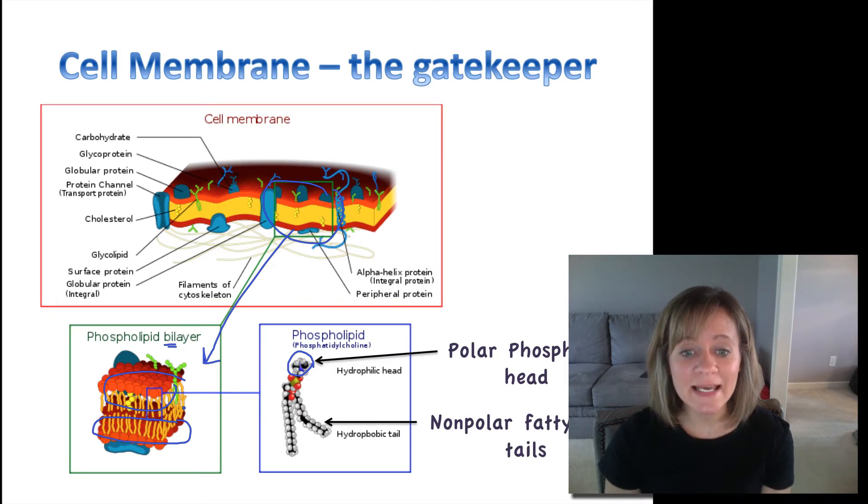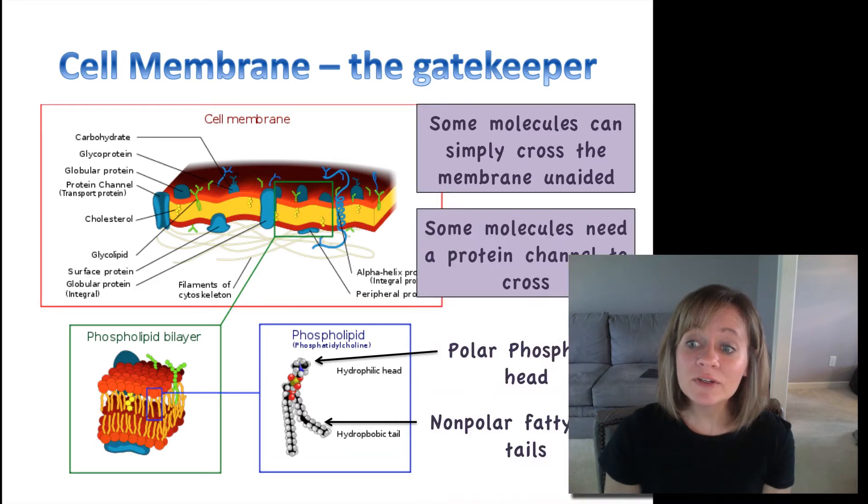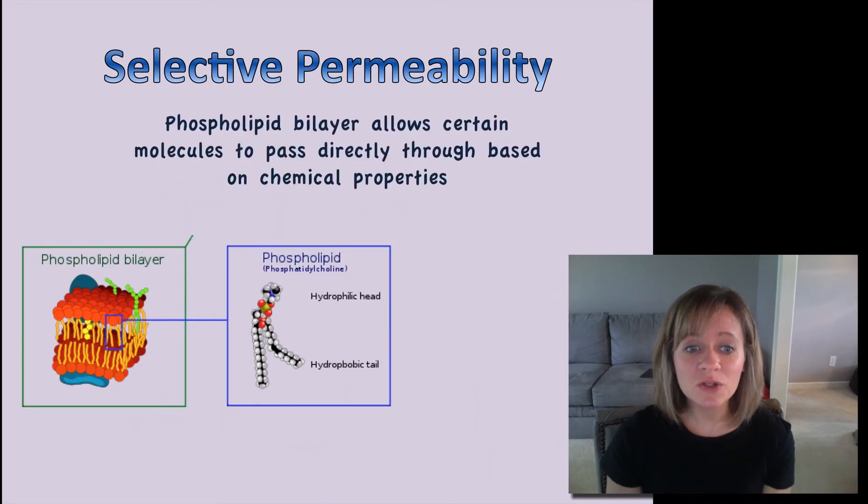So it is the gatekeeper. It's going to allow certain things to pass right through. However, some molecules need a protein channel to cross. So let's take a closer look at this selective permeability. It allows certain molecules to pass directly through based on chemical properties.